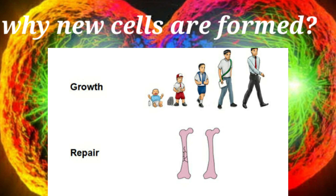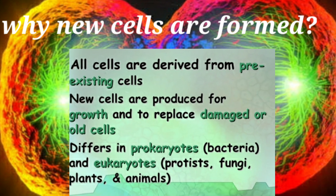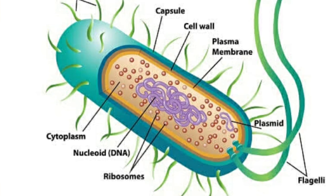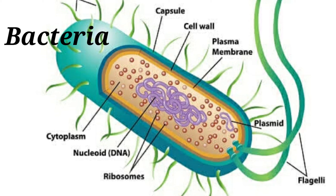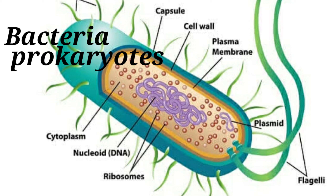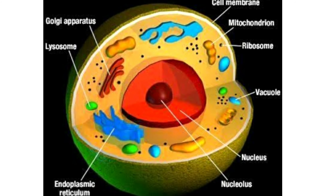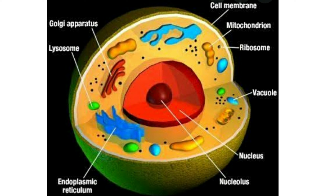Cell division differs in prokaryotes and eukaryotes. Prokaryotes are organisms that do not have a definite nucleus. For example, in bacteria, the nucleus is not bound by a nuclear membrane and such a nucleus is called a nucleoid. Eukaryotes, such as fungi, plants, animals, and protists, have a definite nucleus surrounded by a nuclear membrane — a true nucleus.